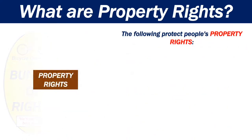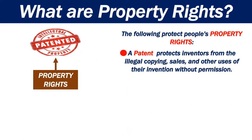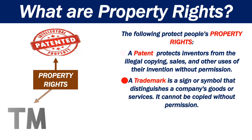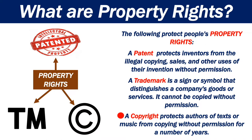The following protect people's property rights. One, a patent — this protects inventors from the illegal copying, sales, and other uses of their invention without permission. Two, a trademark, which is a sign or symbol that distinguishes a company's goods or services. And copyright, which protects authors of texts or music from copying without permission for a number of years.